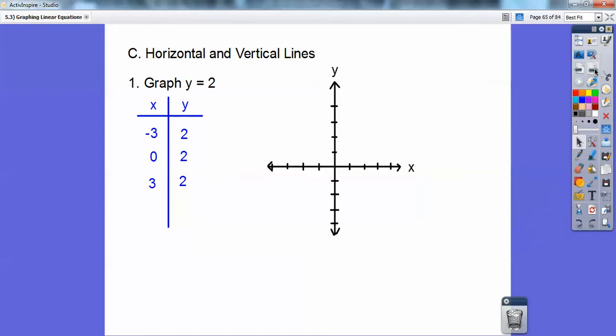So when I graph those, there's -3, 2. There's 0, 2. There's 3, 2. So this says go to the left 3, up 2. That's this one. Go to the left 0, up 2. That's this one right here. Go to the right 3, up 2. That's this one. So when it's y equals a number, it gives you a horizontal line right there.